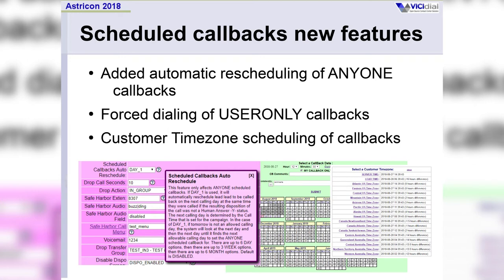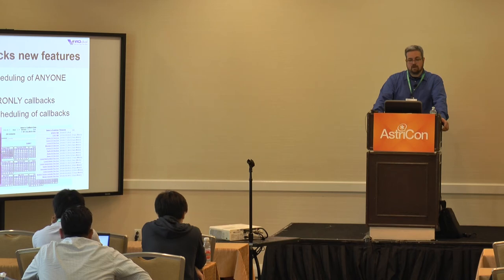The customer time zone feature was especially interesting. This was a client in South Africa calling people in Australia — Australia has three time zones but within two of those they ignore daylight savings time, so there are really five time zones. They needed the ability for the agent to select which area the customer was in and then select a local time, so the system would know when to call them back in server time. Typically before this it would run entirely on server time, but this gives 100% confirmation from the customer of when to call them back in their local time zone.